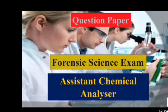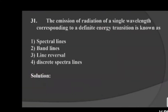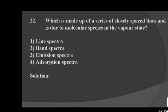Let us start from question number 31. The emission of radiation of single wavelength corresponding to a definite energy transition is known as — option 1: spectral lines, option 2: band lines, option 3: line reversal, option 4: discrete spectra lines. The correct answer is option 1: spectral lines.